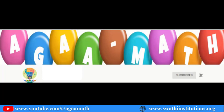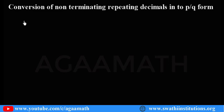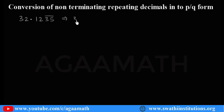Let me take the number 32.1235 bar, where the bar is over 35. That means 32.12353535... and so on — 35 is repeating. So what is the period here? Period is 35; periodicity is 2 because 2 digits are repeating.